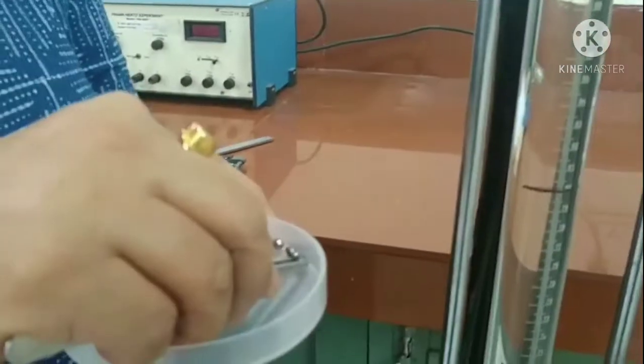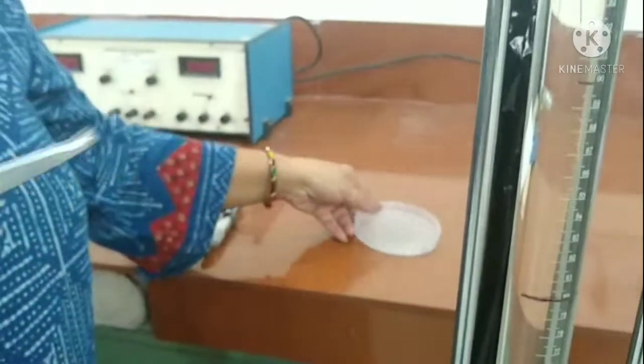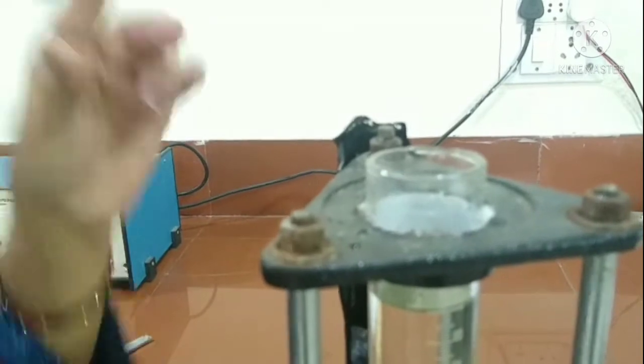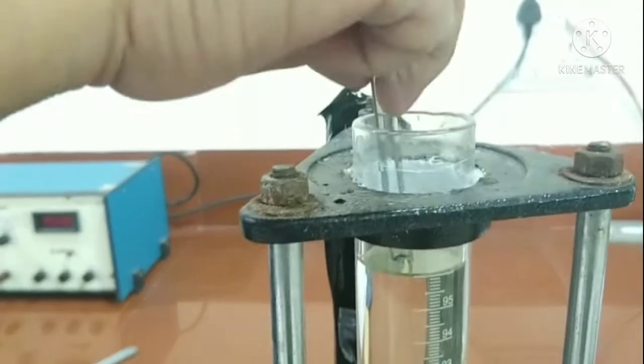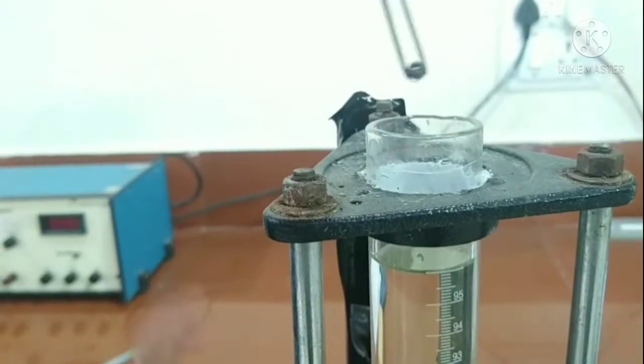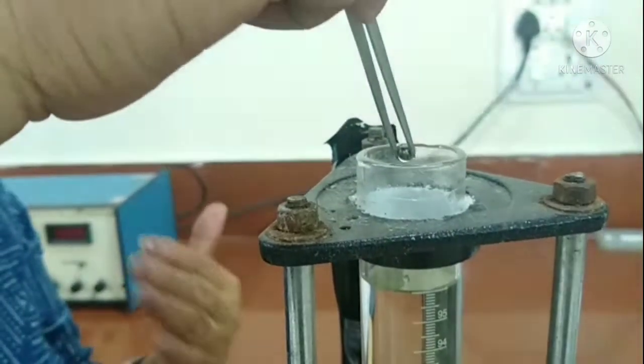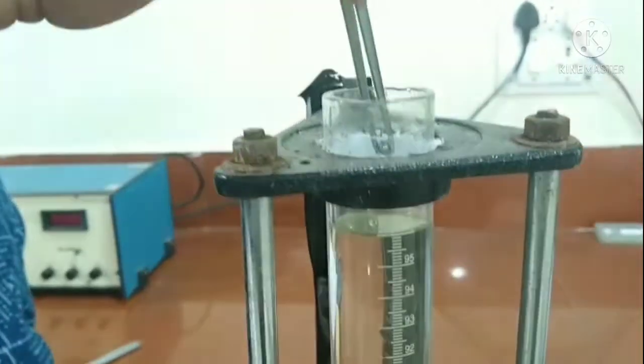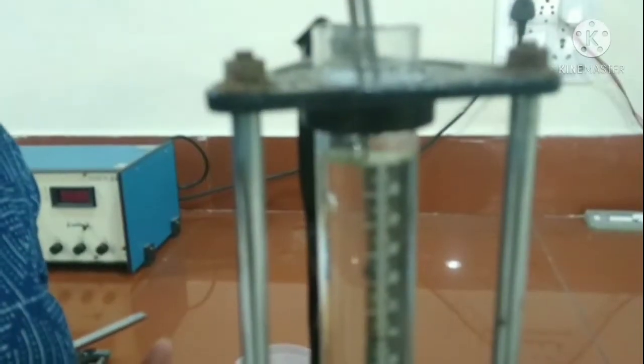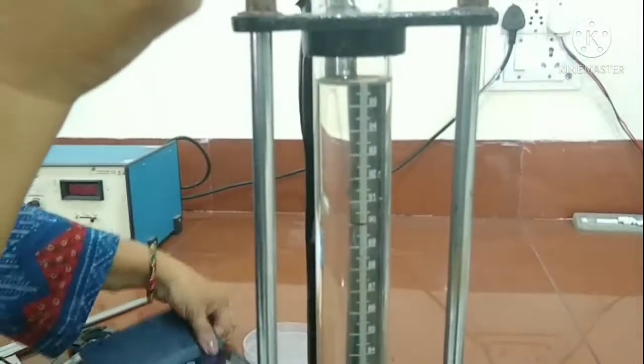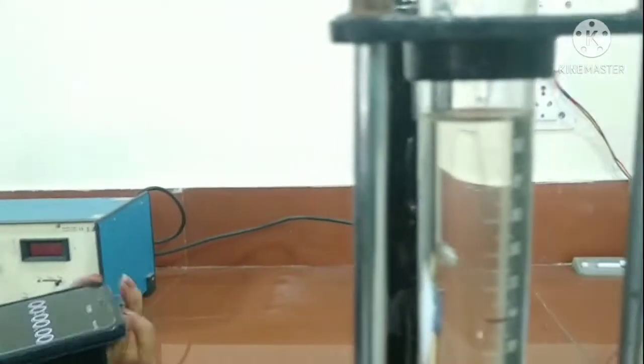Now to start our experiment, we will take one ball of one size and then measure its radius with the screw gauge. Before releasing it in the liquid, we will get it wetted with the experimental liquid so that there is no air gap and the solid is in direct contact with the liquid. It is then released in the liquid gently and our stopwatch is also ready.